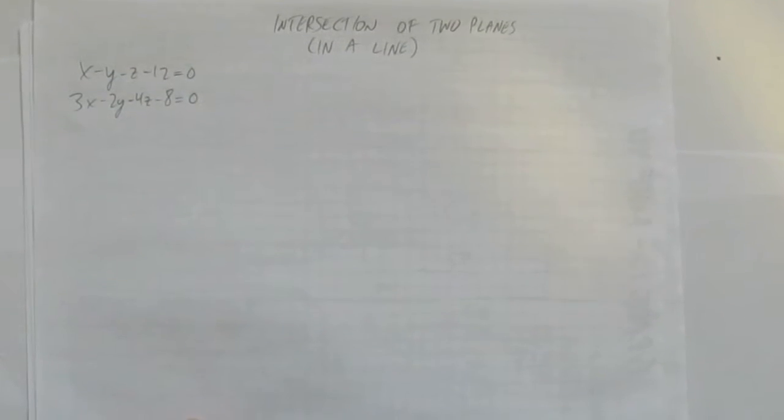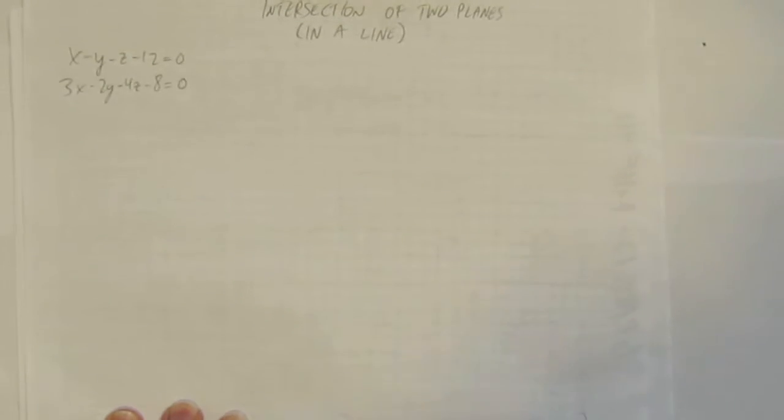In this video, we'll look at the intersection of two planes. When two planes meet, they meet in a line. There's a possibility that they don't meet at all, but these will. Let's see.